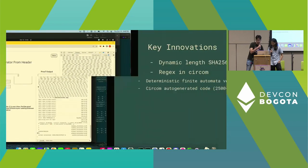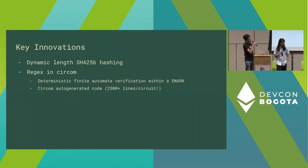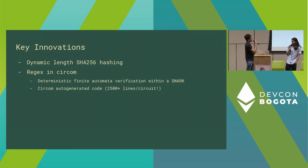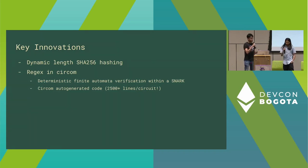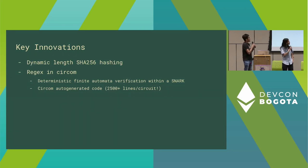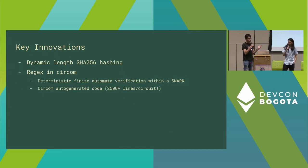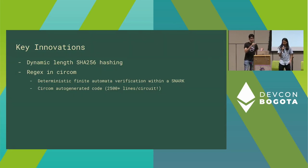The demo is still running, so I'll talk about some of the innovations we made. One is regex, and another is SHA-256 inside the proof. Since we want everything to run in the browser — we don't want people sending their email to a private server — the proof must be very efficient. One optimization is partial SHA-256 hashing. A Twitter email body is about 16 kilobytes, and if we try to hash that entire thing inside a circuit it will take millions of constraints.